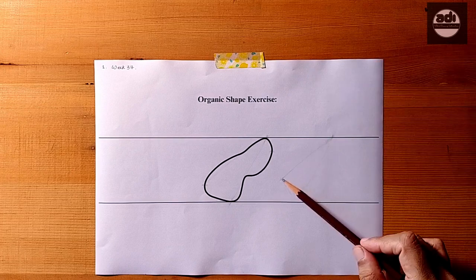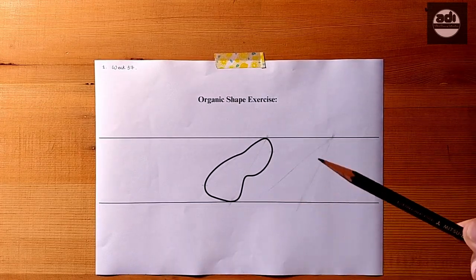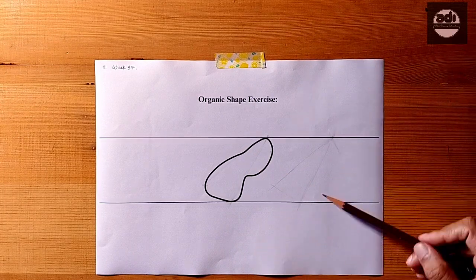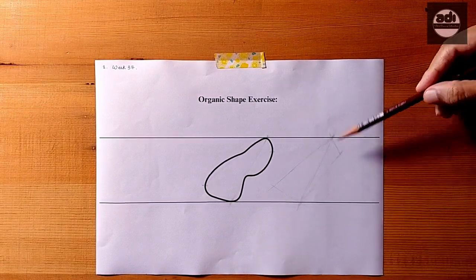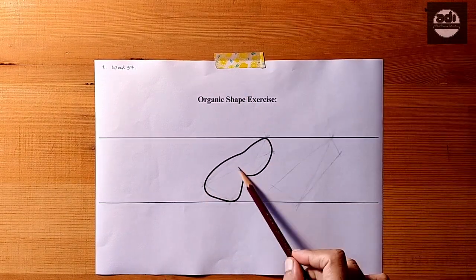The construction line will run from top of the organic shape which touches the head line to the bottom of the shape touching the base line. Think of it as a major axis line usually found in ellipses. Now gauge the angle of this line and draw it.